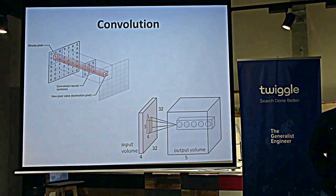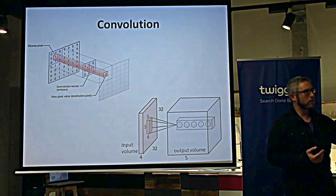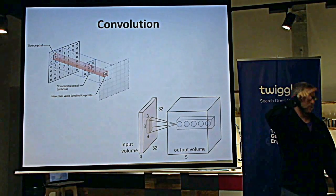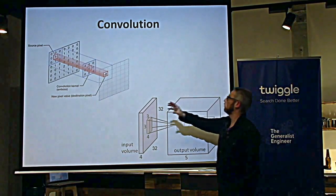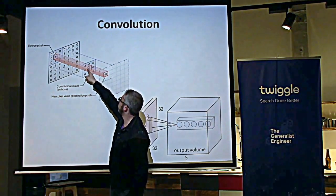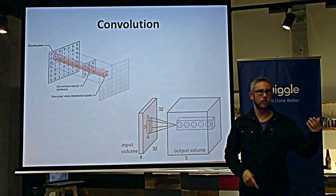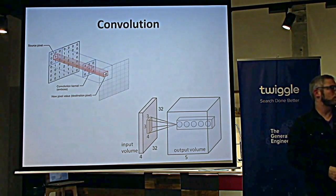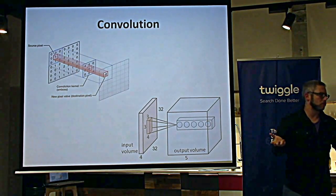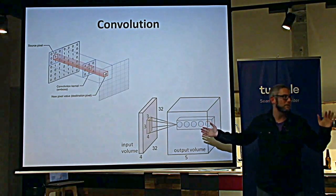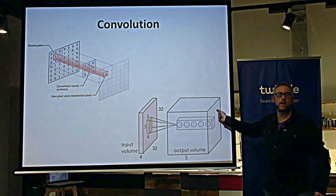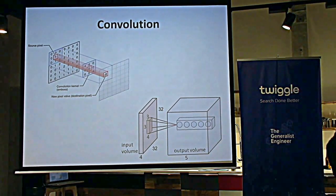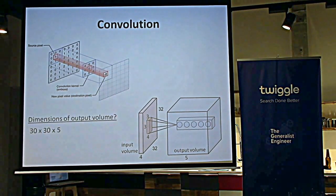Why use five kernels? Because every kernel is a feature detector. If I'm using one kernel, it means I'm looking for one feature in the data — maybe a line at a particular angle. The resulting image of the convolution shows all the places in the original image that had that line at that particular angle. We want the neural network to apply as many features as possible — in this case five, but you can imagine 100, 200, 300. The output volume is 30 by 30 by 5.